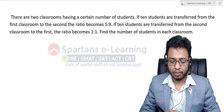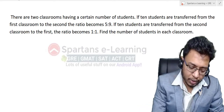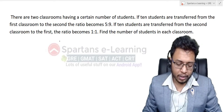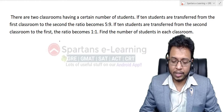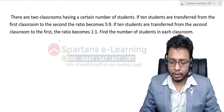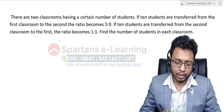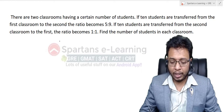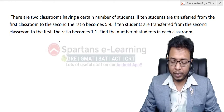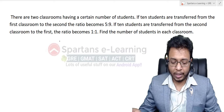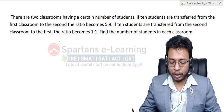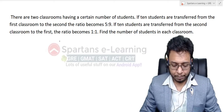The question says: there are two classrooms having a certain number of students. If 10 students are transferred from the first classroom to the second, the ratio becomes 5 is to 9. If 10 students are transferred from the second to the first, the ratio becomes 1 is to 1.